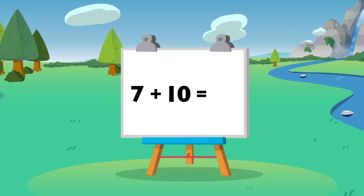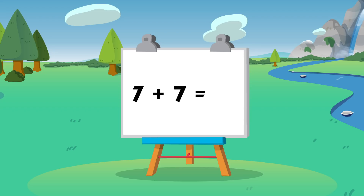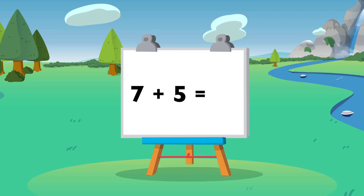Seven plus 10 equals 17. Seven plus two equals nine. Seven plus seven equals 14. Seven plus five equals 12.